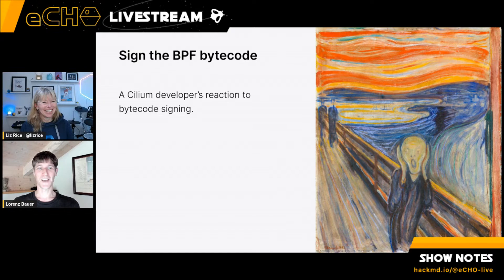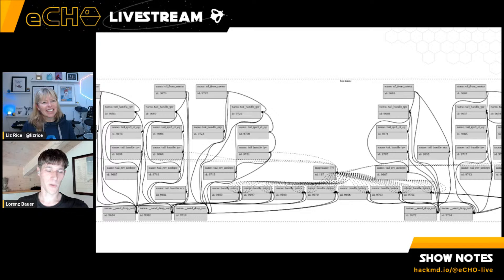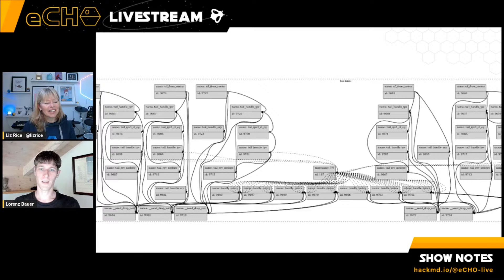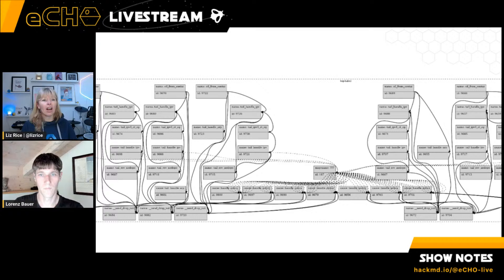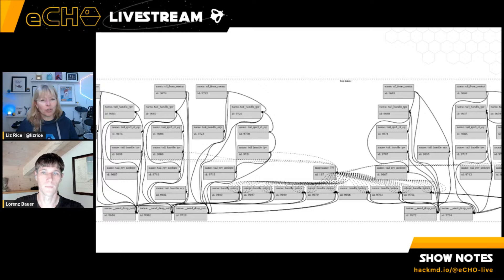To visualize how complicated it is, a colleague Anton wrote a program that shows Cilium's programs and how they relate to each other — each box is a program, each arrow is a tail call into another program. There's a lot of stuff going on, a lot of moving parts, many of which happen at runtime. And this would be a lot of things to sign — there'd be enormous operational complexity in signing so many different things.